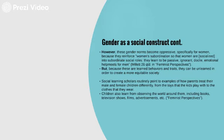There are also the effects of that: traditional gender norms can be really oppressive, specifically for women, because they reinforce women's subordination. One question we can ask about our short story is whether we see that for our narrator. And because these are learned behaviors — taught, passed down, and learned — they can also be unlearned to create a more equitable society. That's one of the questions Munro may be raising: can these be unlearned, and what are the effects of that? Social learning scholars have also pointed out how parents treat their male and female children differently. Boys wear blue and girls wear pink, but up until about the 1920s and 30s, pink was actually considered a very masculine color — that just changed arbitrarily. Children also learn from the world around them: books, TV, all that stuff.